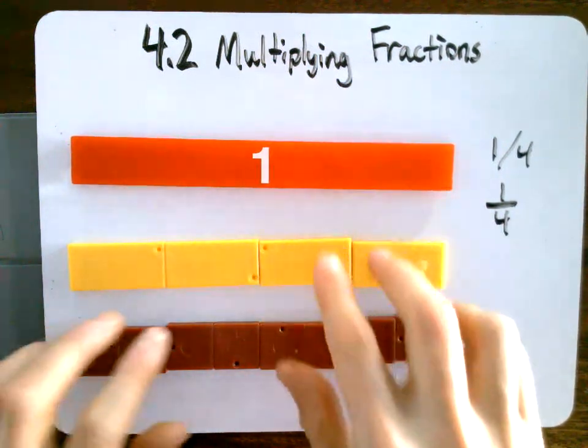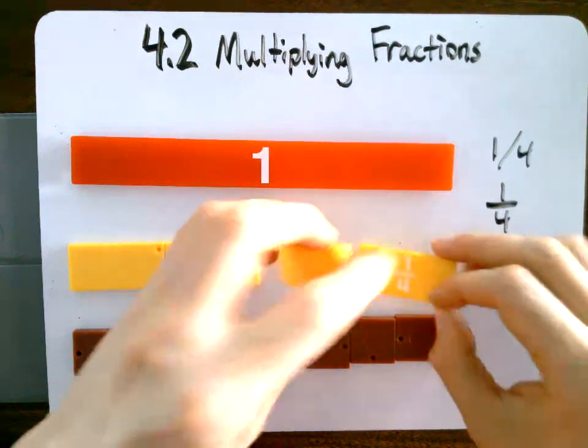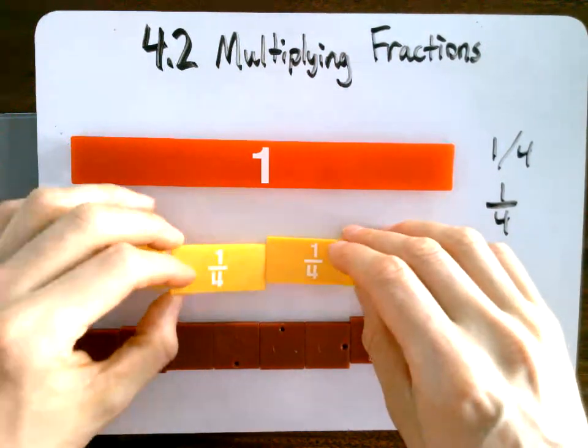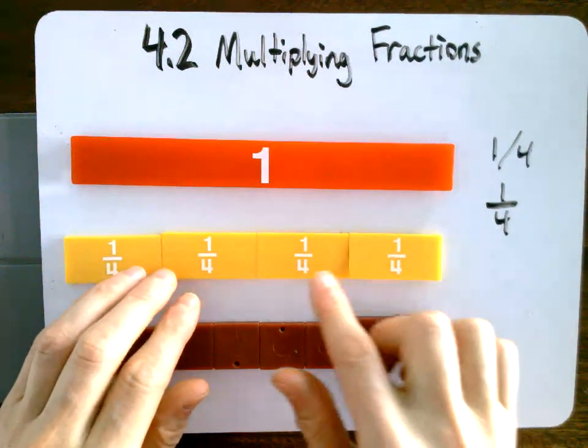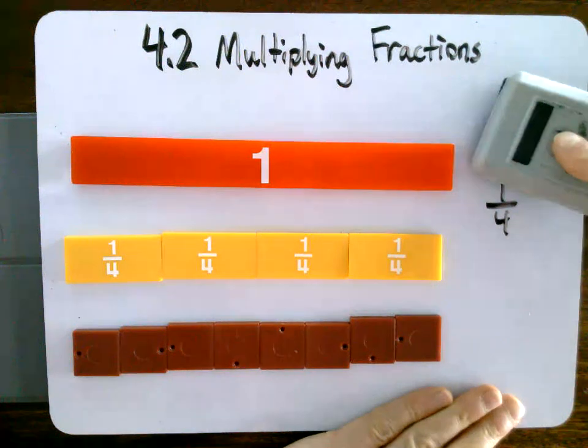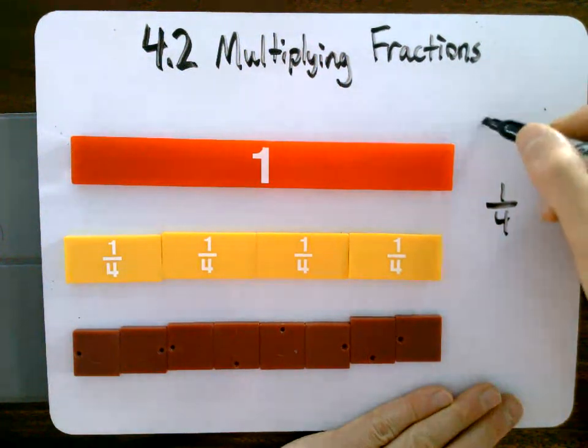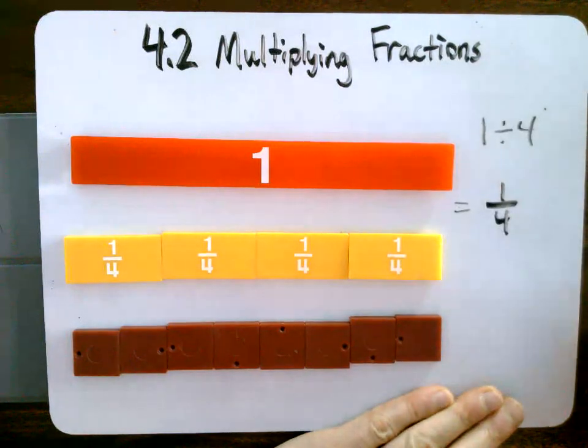So if we were to divide this 1 into 4, that's 1 divided by 4, we would get 4 pieces, the same size, 4 equal pieces, that are each 1 fourth. So this means that 1 divided by 4 equals 1 fourth.